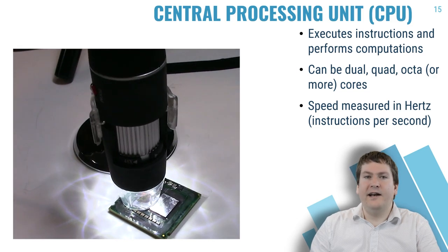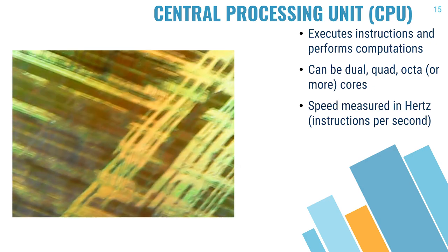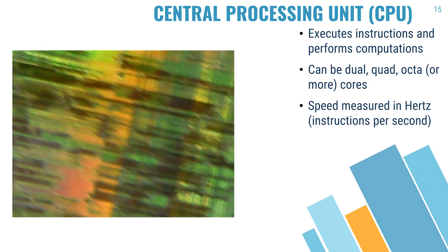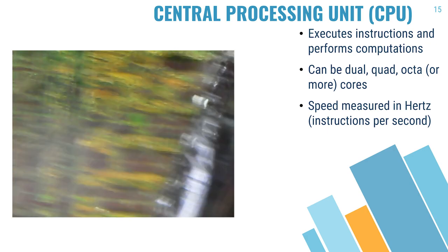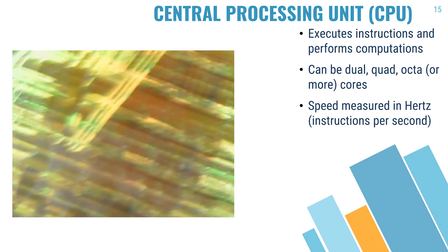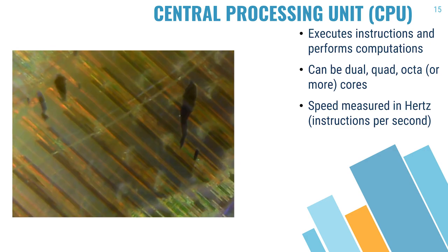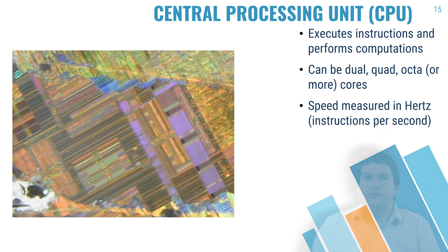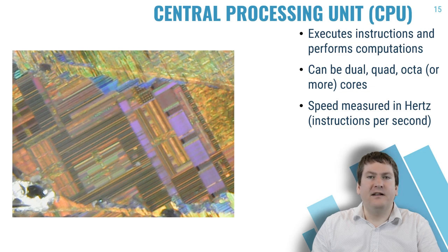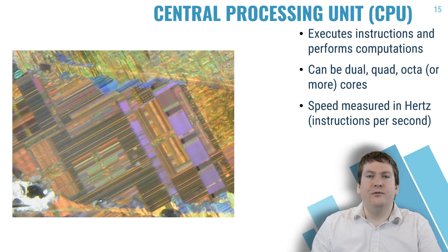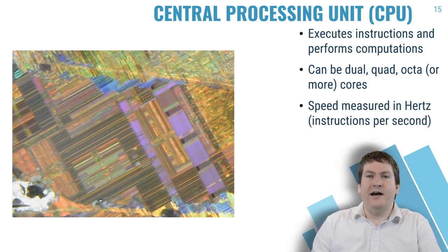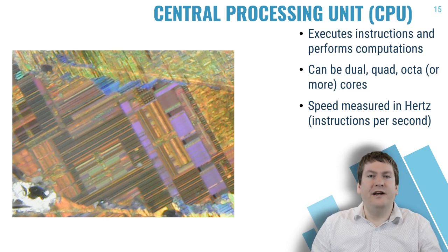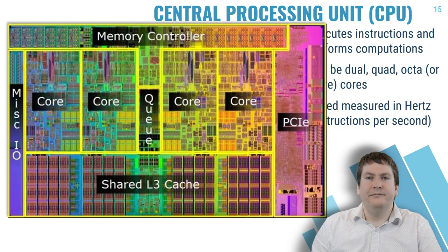Let's take a closer look at the die where I removed the top layer. Unfortunately, due to the reflectiveness of the glass coating and some scratches that occurred while removing the top layer, we can't get too great a look with the microscope, but I do have a reference picture of what a modern Intel CPU looks like up close. All of these parts are incredibly small, barely visible with the naked eye.